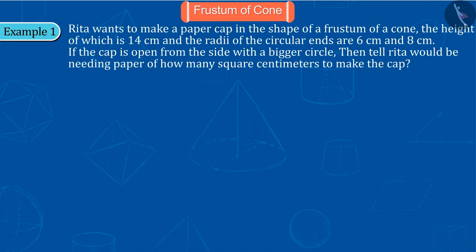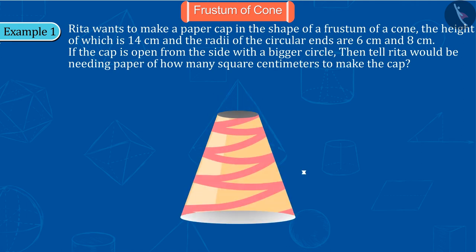Rita wants to make a paper cap in the shape of a frustum of a cone, the height of which is 14 centimeters and the radii of the circular ends are 6 centimeters and 8 centimeters. If the cap is open from the side with the bigger circle, then how many square centimeters of paper would Rita need to make the cap?